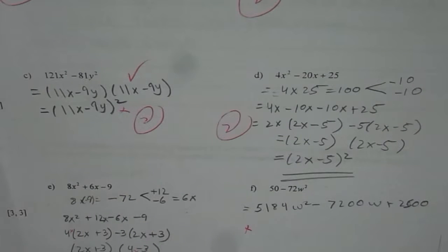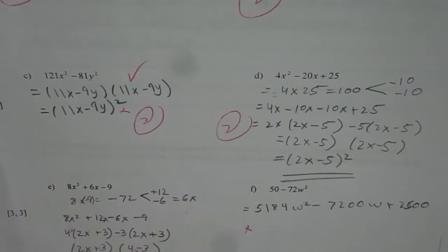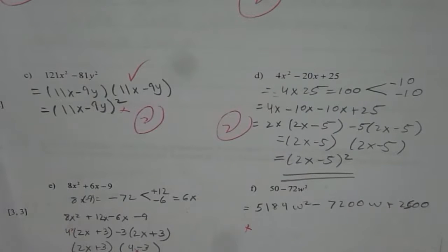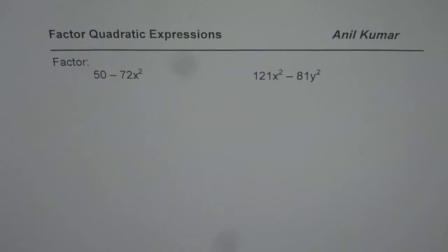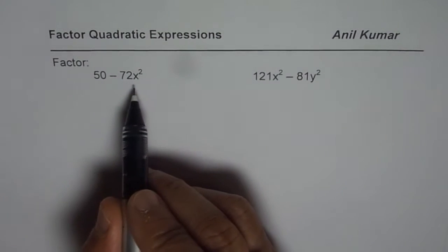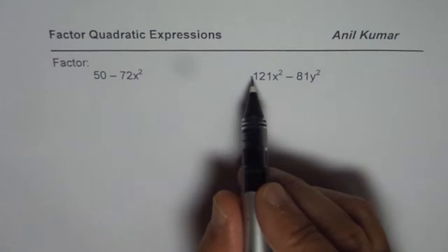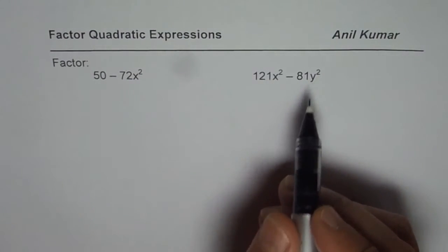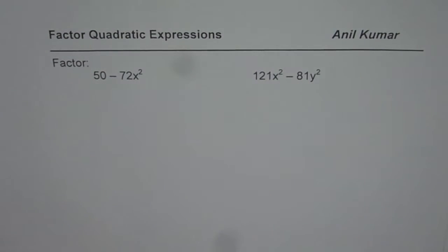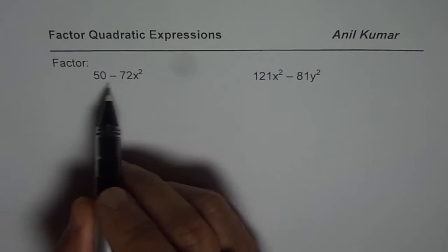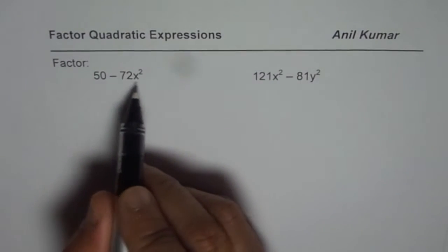Hi, I'm Anil Kumar and now a few more questions on factoring of polynomials from a test paper. We have taken up two questions which are basically difference of squares. Question number one is 50 minus 72x squared. The other one is 121x squared minus 81y squared. I'd like you to pause the video, answer the question and then look into my suggestions.